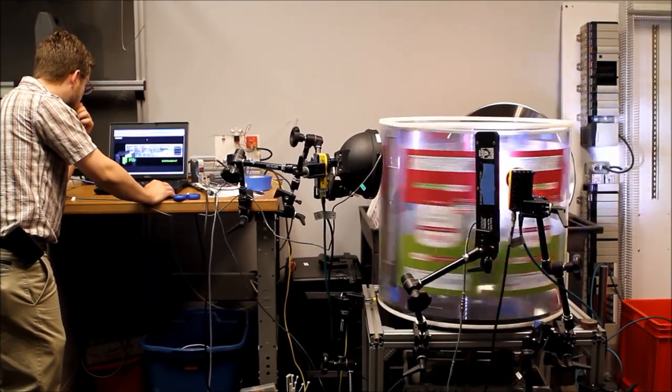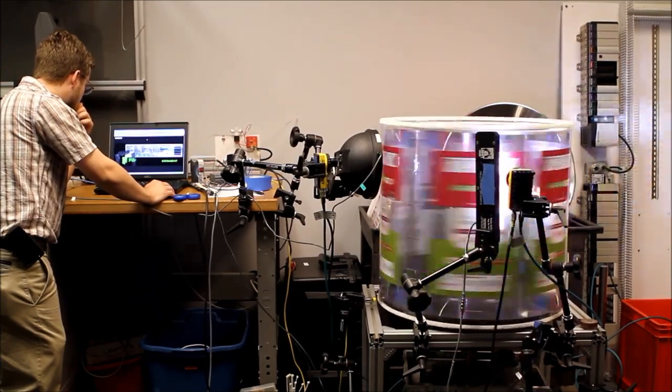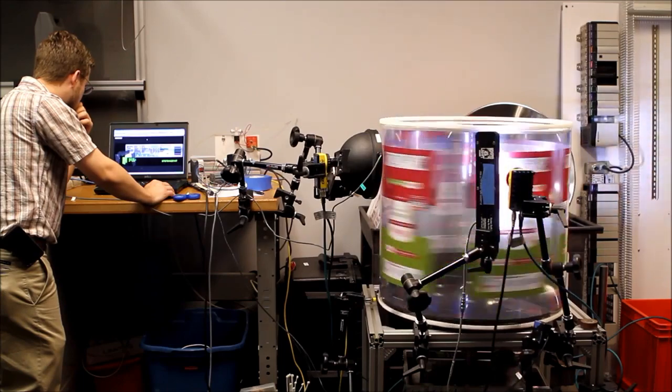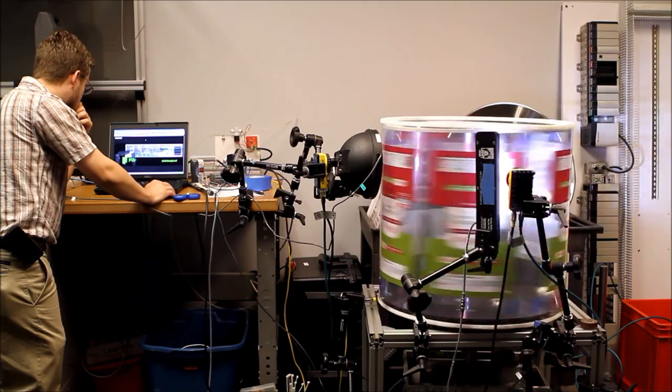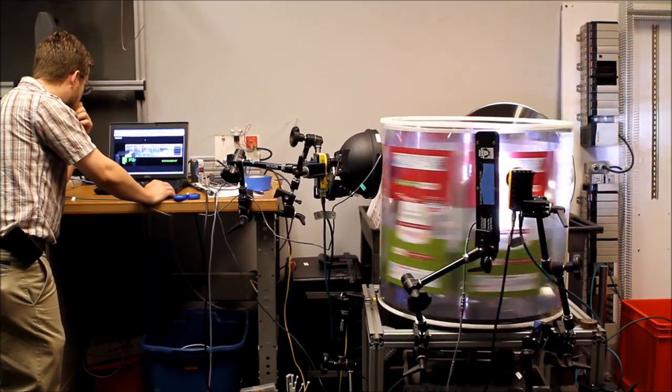This machine vision application shows two different methods commonly used for packaging inspections of artwork, barcode 2D matrix reading, expiration and date code verification, and reading and verification of allergen information on packaging.